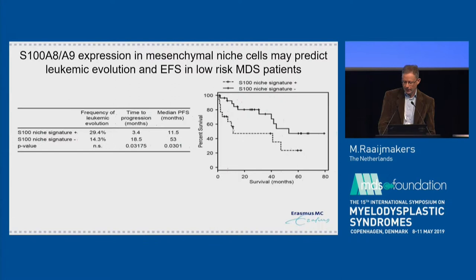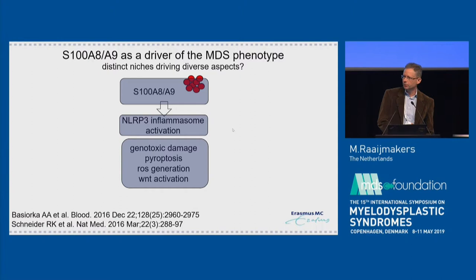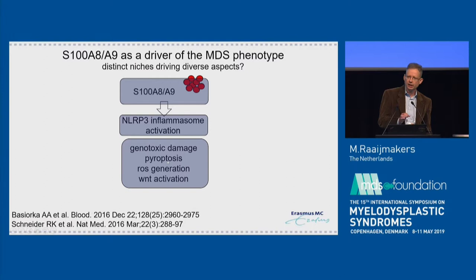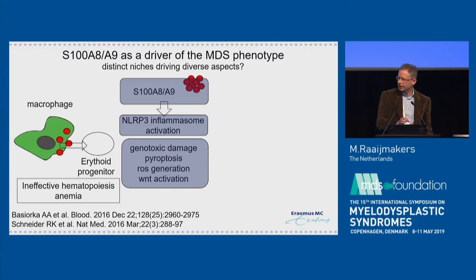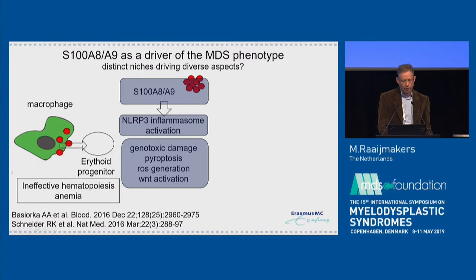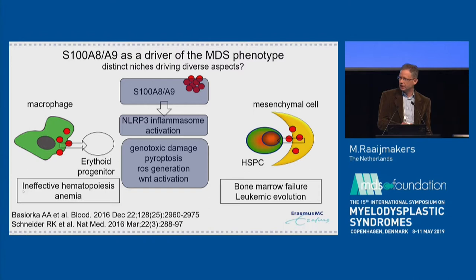This data converged with data from Sheng Wei's lab, Alan List's lab, and Ben Ebert's lab, pointing at a common role in MDS where S100A8/A9 drives through the NLRP3 inflammasome: genotoxic damage, pyroptosis, and ROS. It also indicates another relevant phenomenon — that while S100A8/A9 may be everywhere in the bone marrow in MDS patients, the localization may determine its effect on phenotype. If you have overexpression of S100 in a macrophage or erythroid niche, this may contribute to anemia as shown by Rebecca Schneider in Ben's lab. And if you have overexpression in the mesenchymal stem cell niche, this may drive genotoxicity and perhaps also clonal evolution.